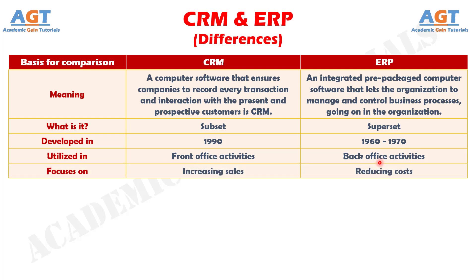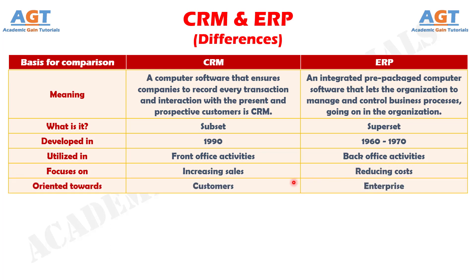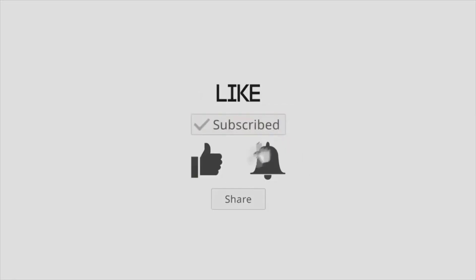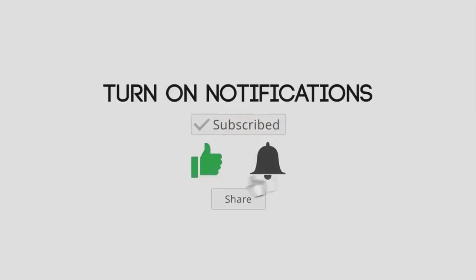Number 5. CRM focuses on increasing sales, whereas ERP gives emphasis on reducing costs. Difference number 6. CRM is oriented towards the management of customer relationship with the enterprise, whereas ERP is mainly concerned with planning the resources of the organization to ensure its best possible use. Thank you.